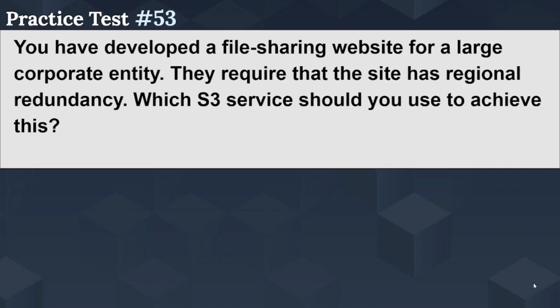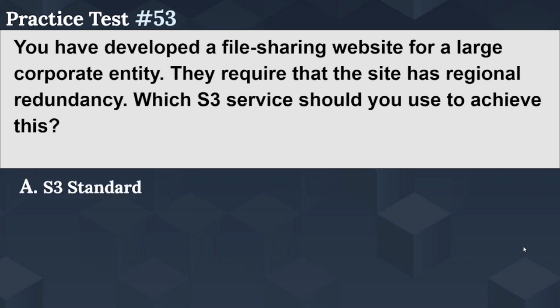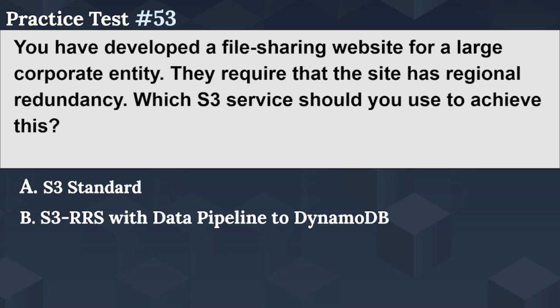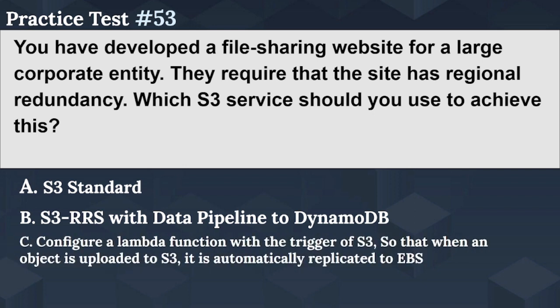The next question is: you have developed a file sharing website for a large corporate entity. They require that the site has regional redundancy. Which S3 service should you use to achieve this? Option A: S3 Standard. Option B: S3 RRS with data pipeline to DynamoDB. Option C: configure a Lambda function with the trigger of S3, so that when an object is uploaded to S3, it is automatically replicated to EBS.